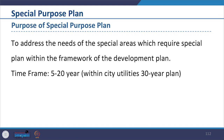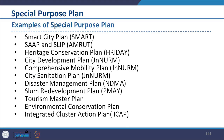The time period ranges from 5 to 20 years. Examples of special purpose plans include city development plan undertaken under JNNURM, comprehensive mobility plan undertaken under JNNURM, city sanitation plan, disaster management plan, slum redevelopment plan, tourism master plan, environmental conservation plan, heritage conservation plan, smart city plan, plan undertaken under AMRUT and integrated cluster action plan.